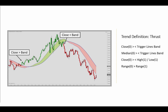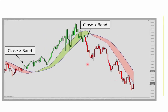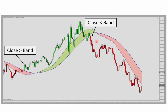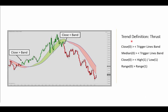The same conditions then apply for a downtrend. You want to have the close below the band, and you want to see the median and range expansion conditions met as well. For example, this is a very small bar, and you want to have a close below the low of the prior bar, which also invalidated this prior bar. Those are the conditions when using the thrust definition for the Trigger Lines trend.